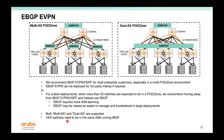Take note: VSX switches in a rack — whether you use Multi-AS or Dual-AS — have to be in the same AS number and you need to run IBGP between them. Two switches in the same AS number run IBGP. You do not need to run IBGP across the racks, just between your VSX peers.